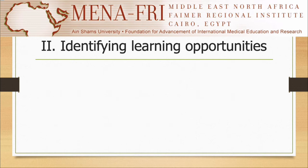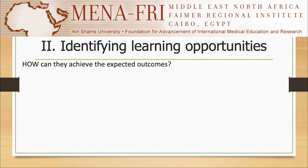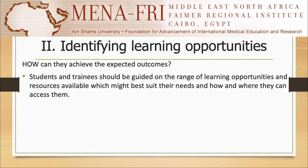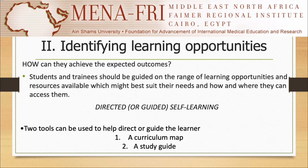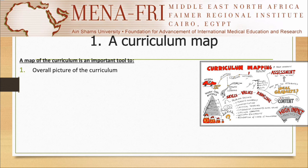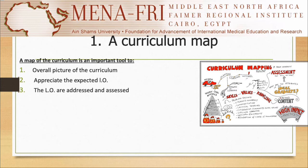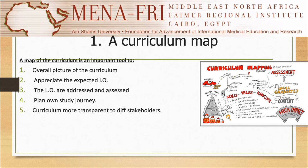The second approach for learning facilitation is identifying learning opportunities. In this approach, we show how the student can achieve the expected outcome. Students or trainees should be guided on the range of learning opportunities and resources available, which might best suit their needs, and how and where they can access them. This gives rise to the concept of directed or guided self-learning. We have a number of tools to help identify learning opportunities. The most popular are the curriculum map and study guide, which will help direct and guide the learner. A curriculum map gives the student an overall picture of the curriculum, helps them appreciate the expected learning outcomes, and see how these outcomes will be addressed and assessed. It also helps them plan their own study journey and makes the curriculum more transparent to different stakeholders.